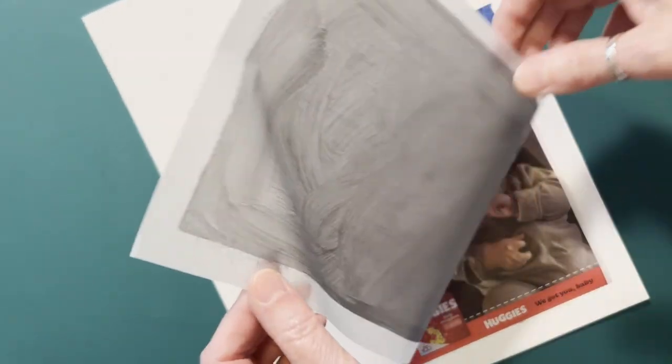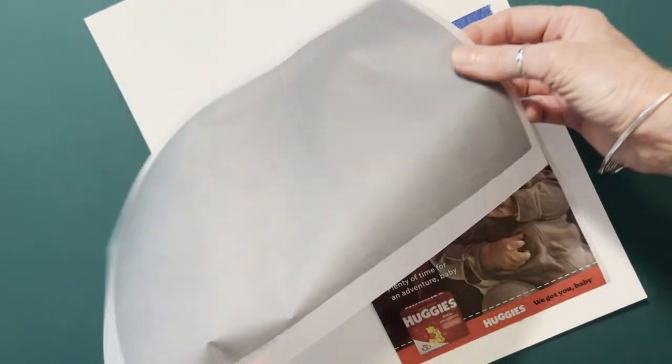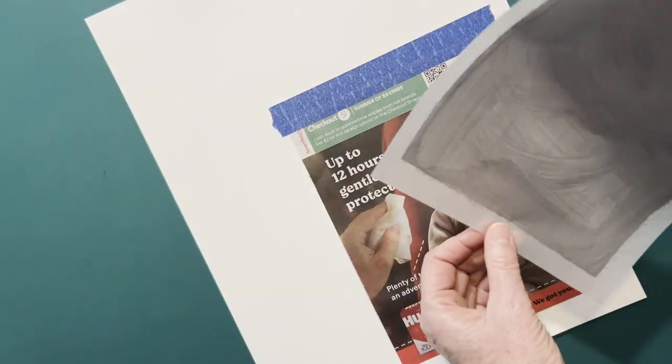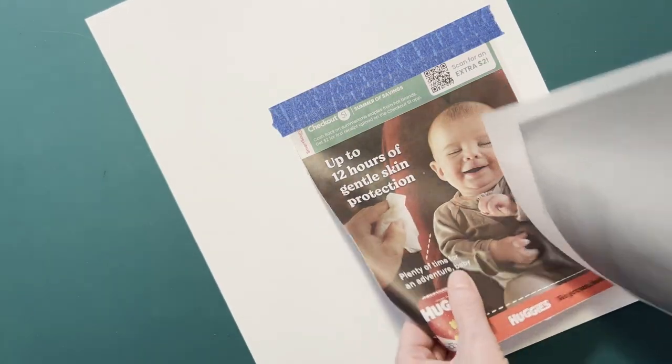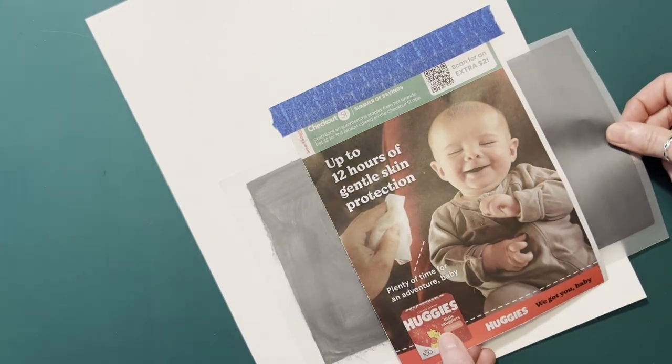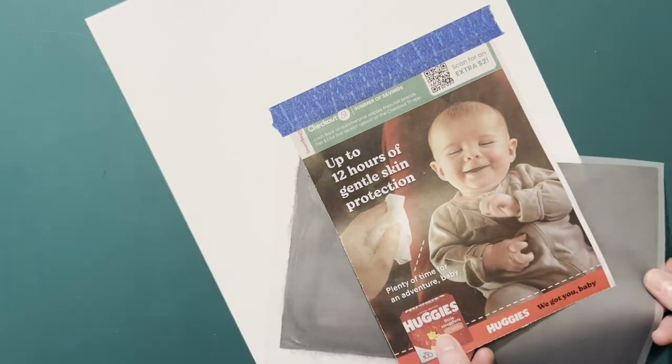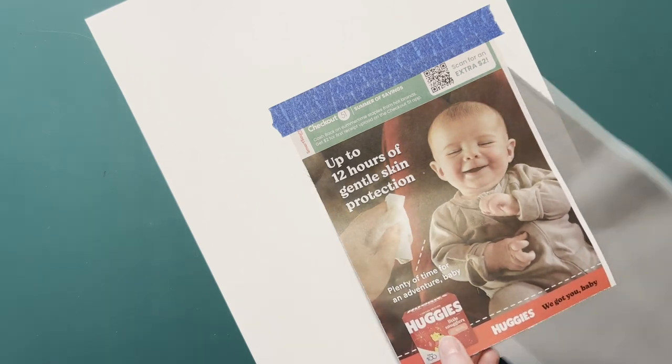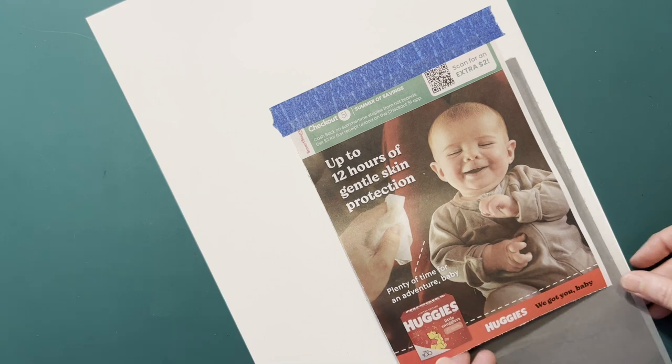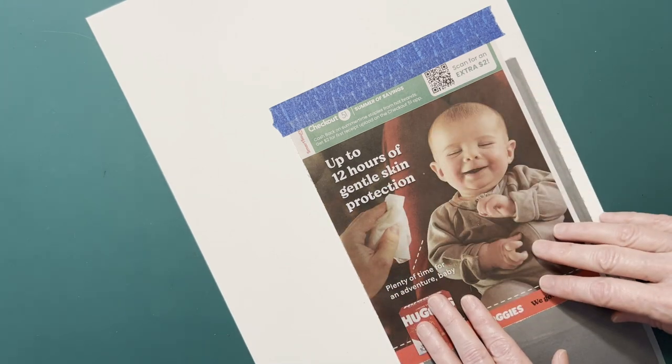Then I'm going to take my transfer paper that I just made. The back that we scribbled all over, we're going to turn that down to face your drawing paper. You can turn it however you want and move it as you need to. I'm going to make mine go vertically and it will cover this whole image.